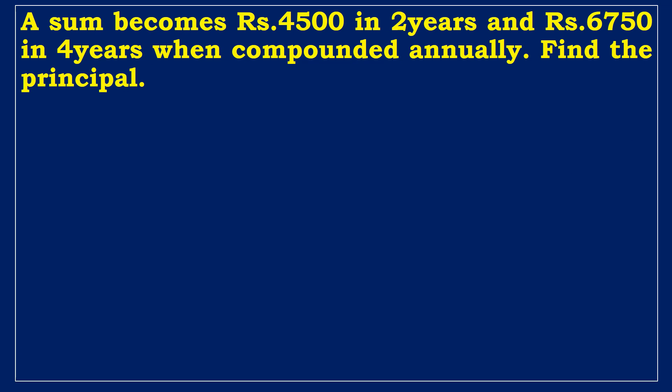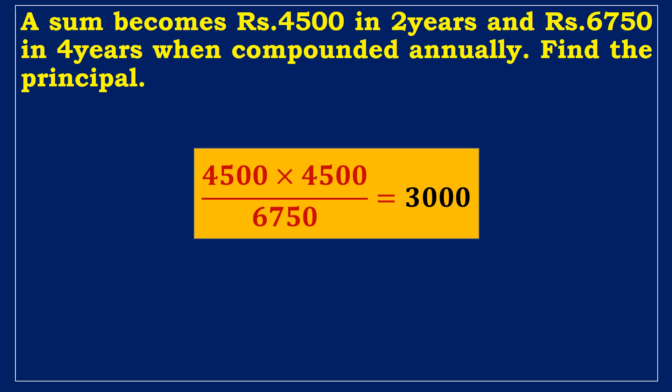Third example: A sum becomes 4500 rupees in 2 years and 6750 rupees in 4 years when compounded annually. Find the principal. In 2 years a sum becomes 4500 rupees, and in 4 years it becomes 6750 rupees. The ratio between amounts gives the principal: 4500 × 4500 / 6750 = 3000 rupees.